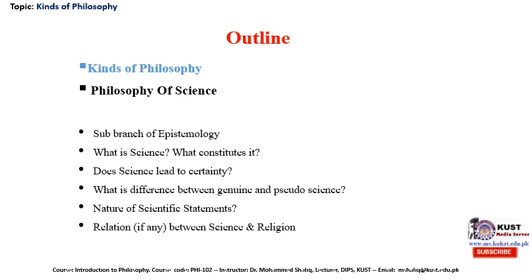The outline of today's lecture consists of an overview of different kinds of philosophies such as philosophy of science, political philosophy, philosophy of language, philosophy of religion, and philosophy of education, to name a few. There are other branches as well, but these are the more important ones. Let's start with the philosophy of science — what does it mean? As discussed in previous lectures, philosophy is basically a search for truth, love for wisdom or knowledge. Philosophy of science is a sub-branch of epistemology.